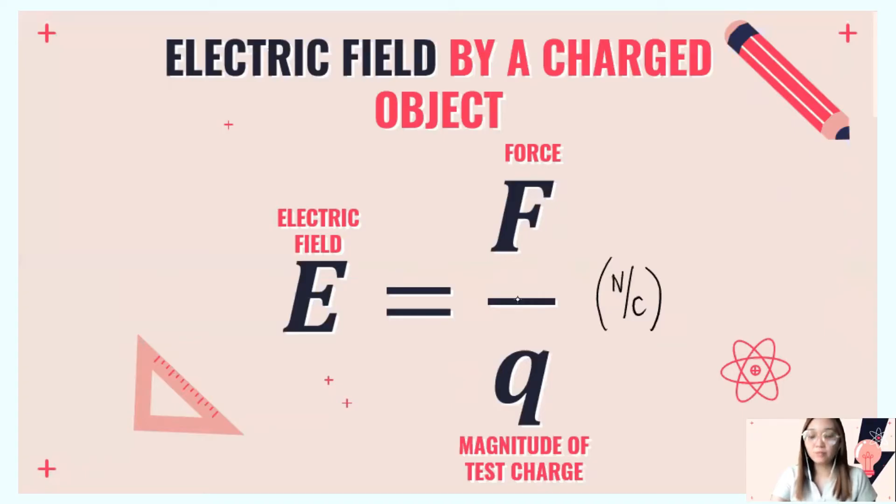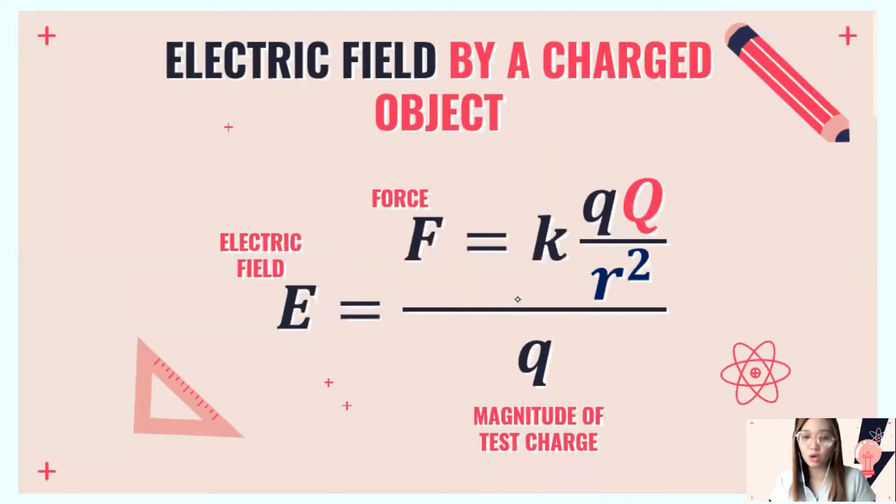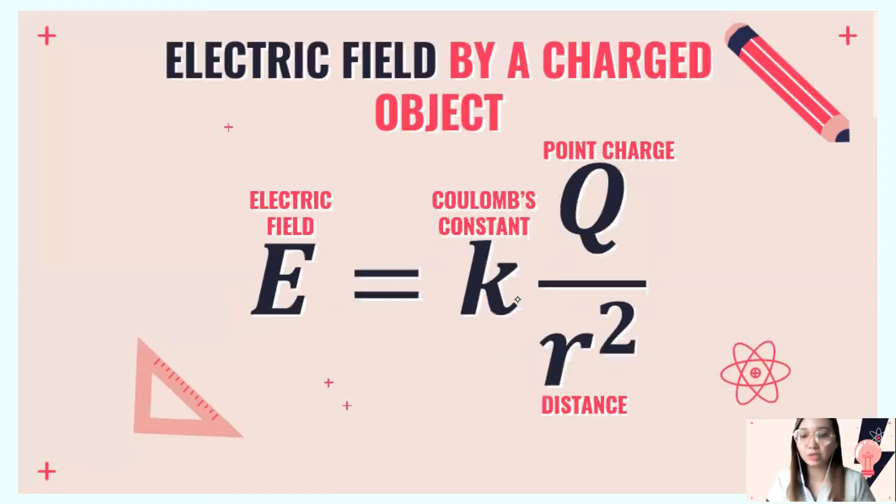Another equation for electric field based from Coulomb's Law: if we substitute the value of Coulomb's Law for F, and cancel one charge, we get E equals k times q over r squared, where k is the Coulomb's constant equal to 9 times 10 to the 9.